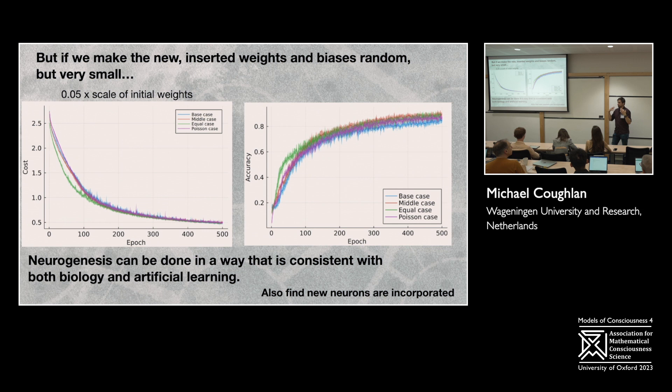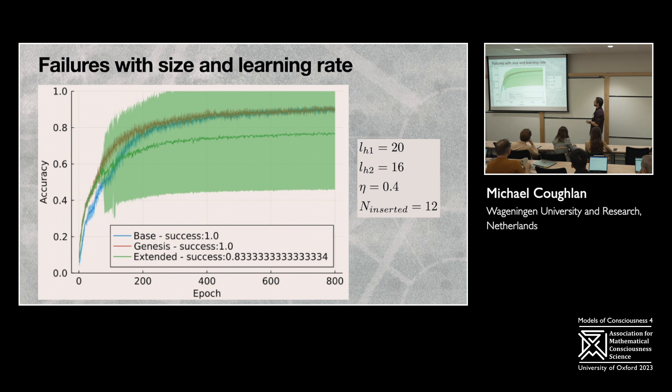And so what we really show here is that neurogenesis, this biological thing that the engineers don't really consider at all, can be incorporated in a way that is consistent with the biology and the artificial learning, even if it mightn't be what the engineers necessarily want for the absolute best performance of a model, because obviously they're paying attention to something very different.